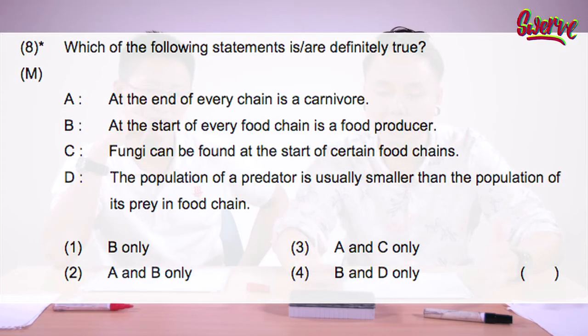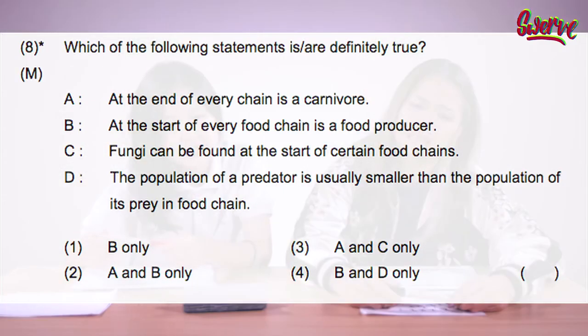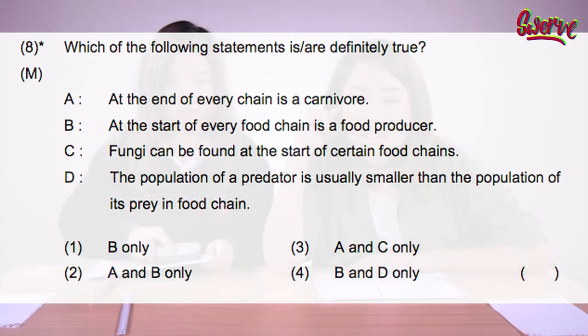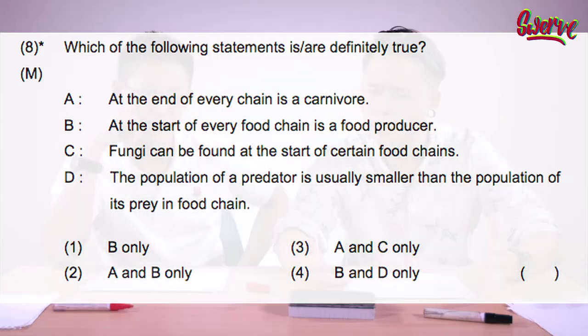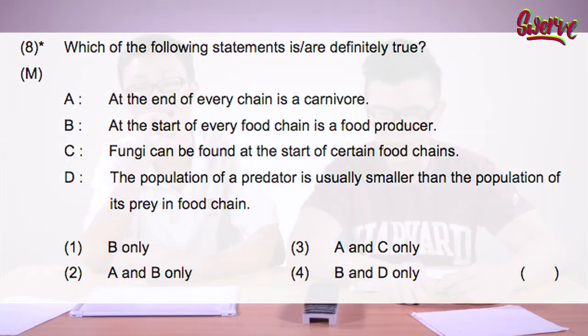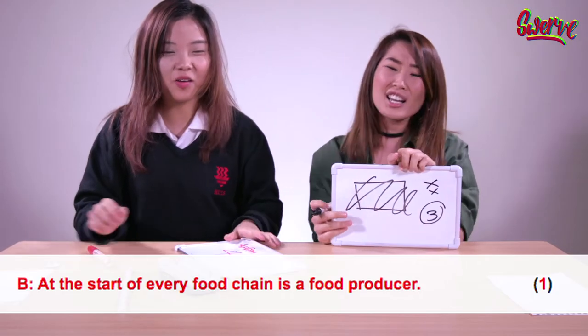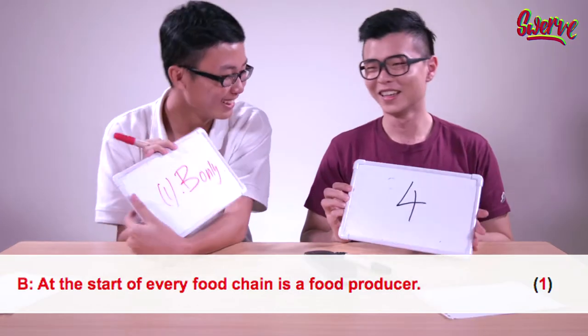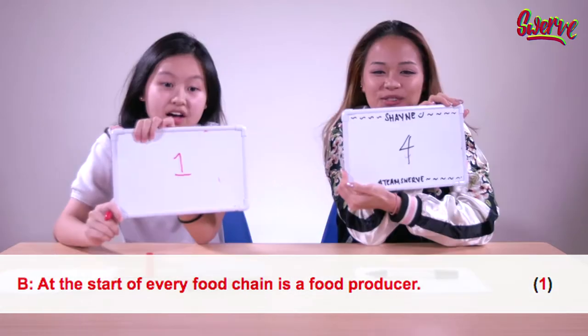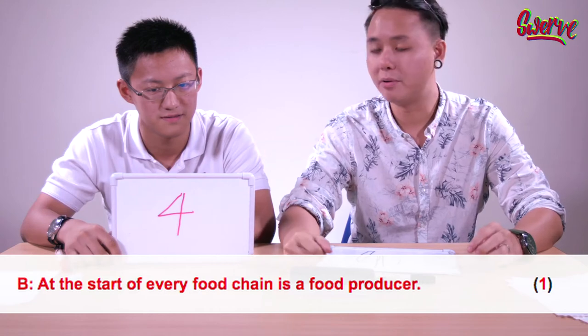Which of the following statements is definitely true? At the end of every chain is a carnivore. At the start of every food chain is a food producer. Fungi can be found at the start of certain food chains. The population of a predator is usually smaller than the population of its prey in a food chain. It's probably not math anymore. I can do science, y'all. Let's collaborate on this one. Bye guys. Can I not do this anymore? Yes! If Cambridge did it, it must be right.